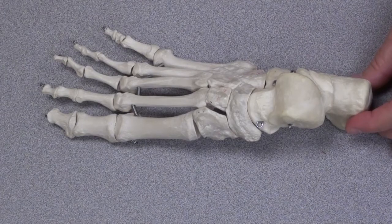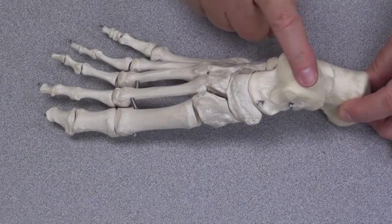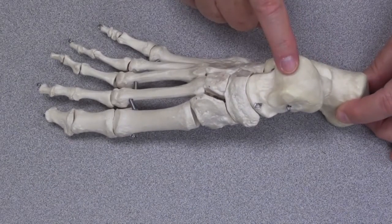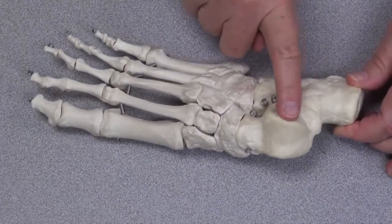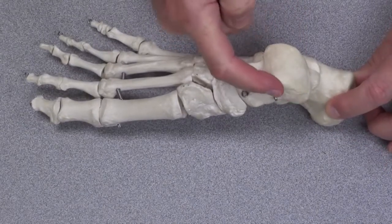This is a skeleton of the right foot. This surface is part of the talus. So if we look at this surface, this surface, and this surface, we're looking at the ankle joint.